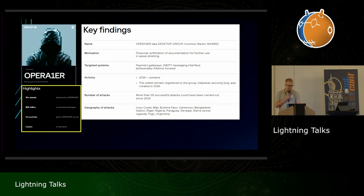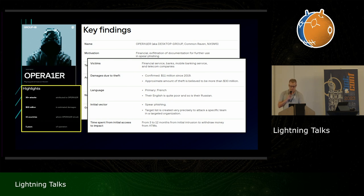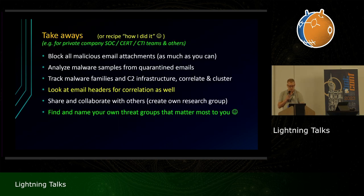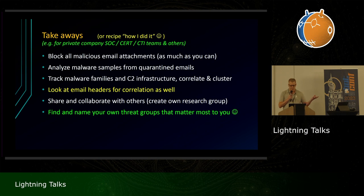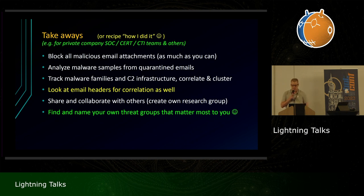There are some nice key findings: they've done more than 30 attacks, stolen more than 30 million in 15 countries, and they likely originated from a French-speaking country in Africa. Most attacks have been against French-speaking countries across different continents. The takeaway: aggressively block all email attachments that could be malicious, do malware analysis on quarantined samples, track malware families, correlate infrastructure, look at targeting and email headers, share and collaborate, and find and name your own threat groups.